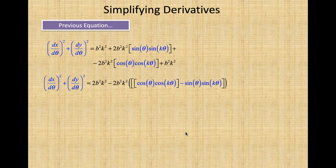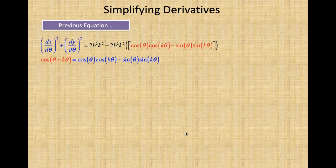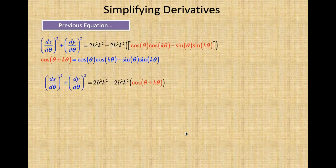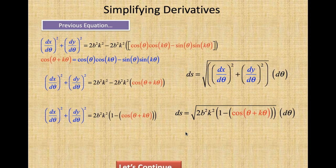Now we see more simplification. We have cosine θ times cosine kθ minus sine θ times sine kθ. We know what that equals — that's a trig identity: cosine(θ + kθ). So we plug that in, and now we plug that under our radical.